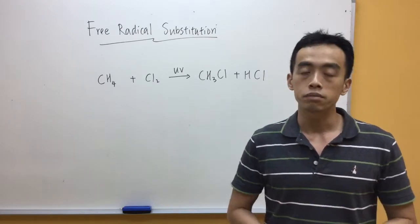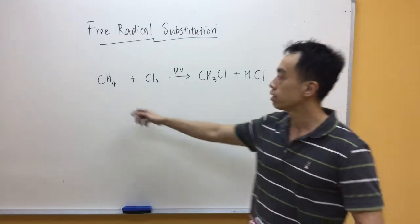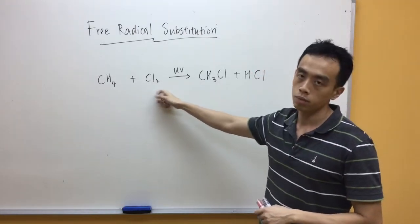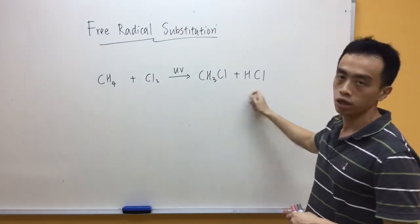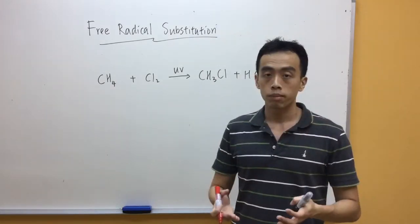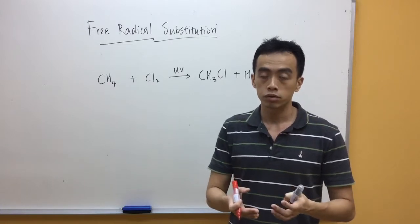Now let's look at a very simple example involving methane plus Cl2 in the presence of UV light, gives CH3Cl and HCl. Before we draw the mechanism for free radical substitution,